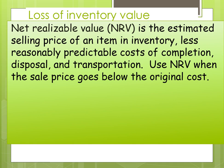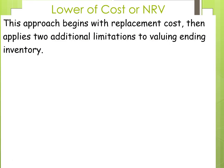Loss of inventory value. What ends up happening is a lot of times we buy things and the cost goes down. So what we like to do is make sure that when we look at our inventory we value it at what we consider net realizable value, which is the estimated selling price of an item in inventory less reasonably predictable costs of completion, disposal, and transportation. We use net realizable value when the sale price goes below the original cost. This lower cost or net realizable value approach begins with replacement cost then applies two additional limitations to valuing ending inventory.